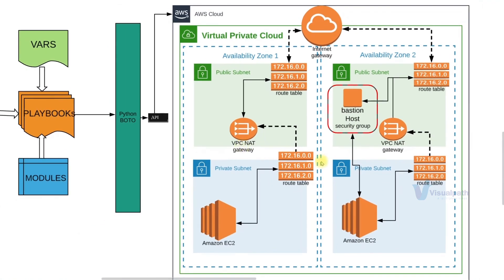We'll also have a bastion host — a jump server — placed in the public subnet so it can be accessed from the internet. That bastion host will then have connections to private EC2 instances in the private subnet. There will of course be a security group on the bastion host. This entire setup will be done through our playbooks: the playbook uses modules, variables, and Python boto to connect to AWS and configure the VPC with subnets, internet gateway, and NAT gateway.